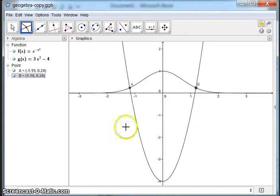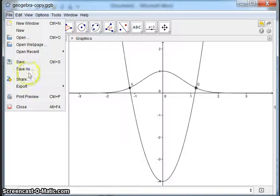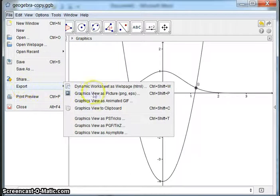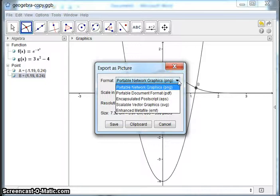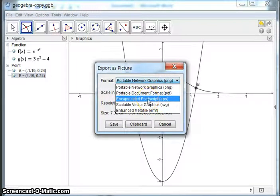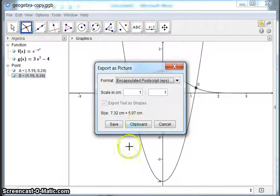The other way to do this is actually to save the graphics view as a file. And now we can come to export and you can save graphics view as picture. You can choose what type of format you want. I tend to like the encapsulated postscript, but you can choose another one. So I'm going to save it as encapsulated postscript.